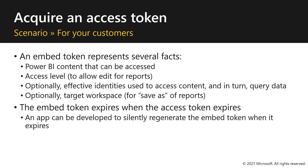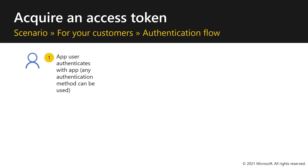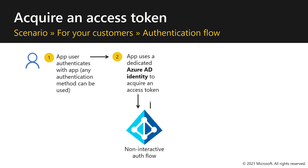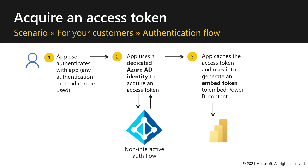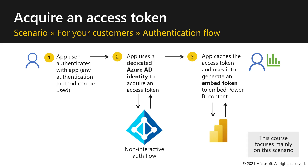Now let's see how the authentication flow works in the for your customers scenario. The app user authenticates to the app with any authentication method. The app uses a dedicated Azure AD identity to acquire an access token for the user through a non-interactive authentication flow. Once the access token is acquired, the app caches it and uses it to generate an embed token, which is required to embed Power BI content. Remember, in this course we focus mainly on this scenario.